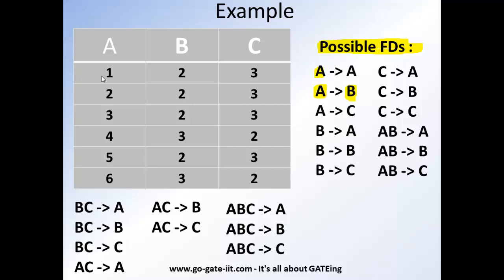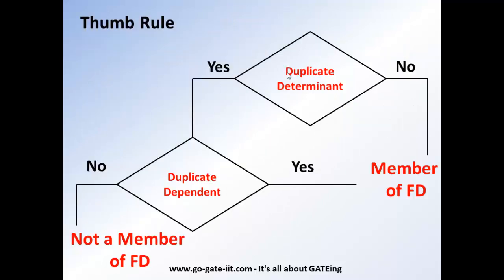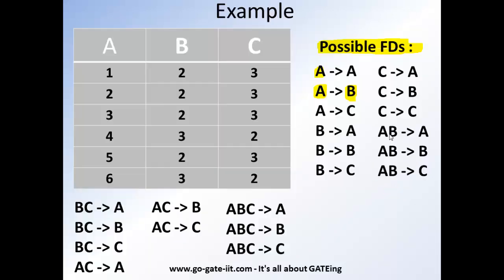So as the flowchart in the previous slide it says we have to check first whether the determinant is duplicate or not to determine whether the given functional dependency is valid or not. Now let's apply this flowchart or the algorithm in this relation. So we say B is derived by A. So for this instance we have 1. 1 derives 2. Very well.